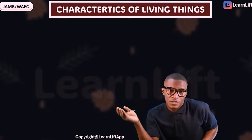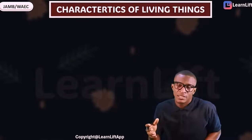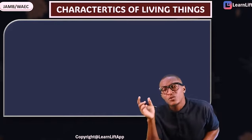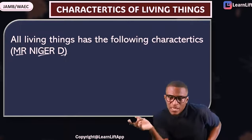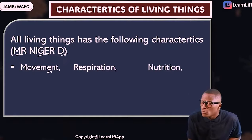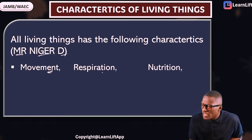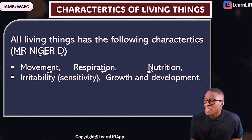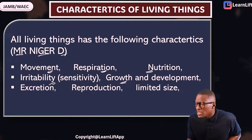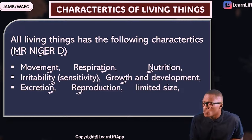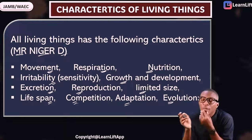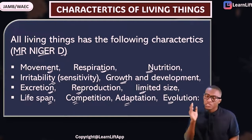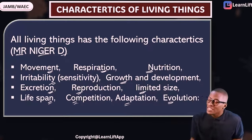What are the characteristics of living things? We said that organisms that have life are called living things, and the study of living things is biology. The characteristics of living things — I call them MR NIGER D. They include: movement, respiration, nutrition, irritability or sensitivity, growth and development, excretion, reproduction, limited size, lifespan, competition, adaptation, and evolution.